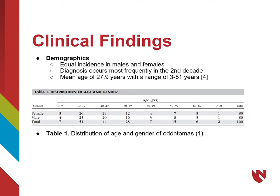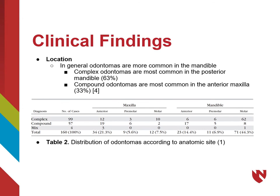Clinically, odontomas are equally distributed between males and females and can occur at virtually any age; however, diagnosis is most frequent in the second decade with an average age of diagnosis around 28 years old. Overall, odontomas are more common in the mandible. Approximately 63 percent of complex odontomas occur in the posterior mandible, while 33 percent of compound odontomas occur in the anterior maxilla.